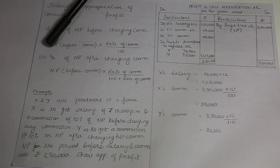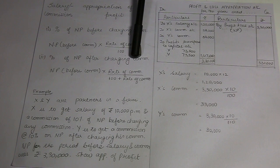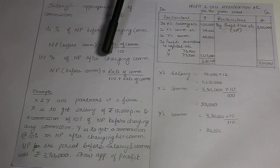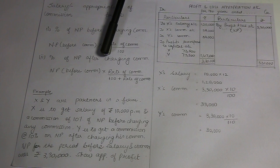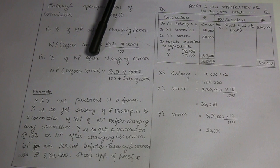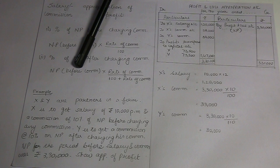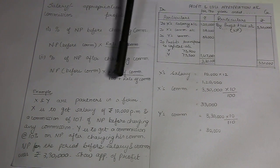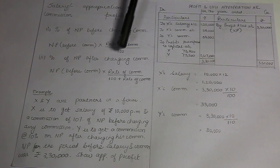In Case 2, when commission is given as a percentage of net profit after charging such commission, the formula is: net profit (directly received from P&L account) multiplied by rate of commission divided by (100 plus rate of commission). Let us understand this more easily.